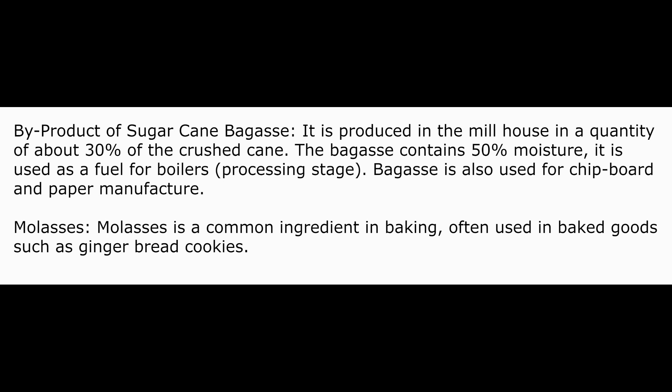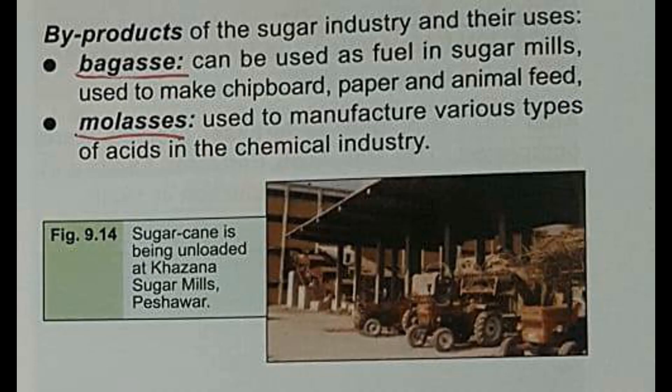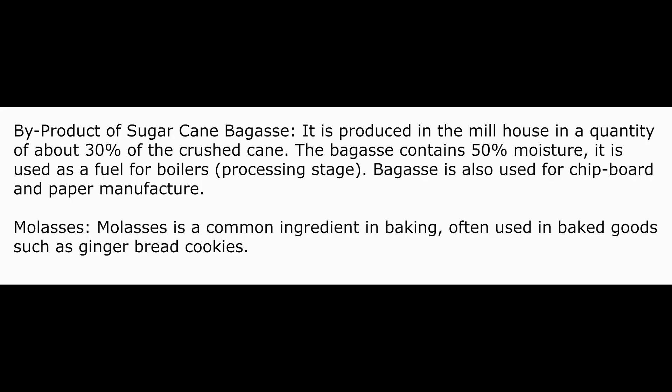Bagasse is also used for chipboard and paper manufacture. Another byproduct is molasses, which is used to manufacture various types of acids in the chemical industry. Molasses is also a common ingredient in baking, often used in baked goods such as gingerbread cookies.